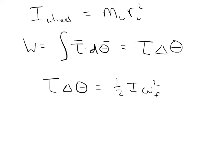Now, what we're going to do is plug in this quantity up here for the moment of inertia of the wheel. That's going to give us T delta theta is one-half m r squared omega final squared, and that's our wheel quantity squared.